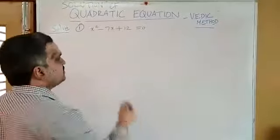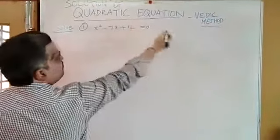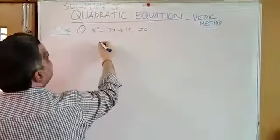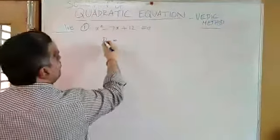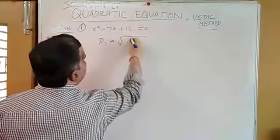So, I am giving first Vedic method formula. Derivative 1. Derivative 1 means differentiation. First derivative, z equal to delta. Delta is nothing but discriminant.